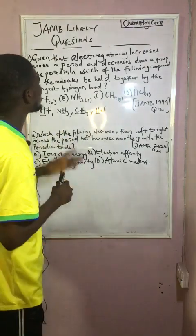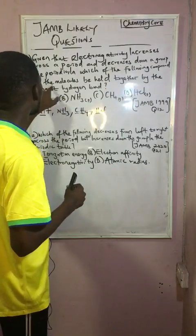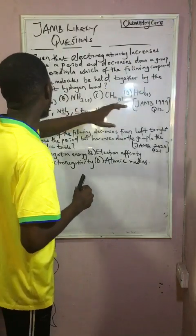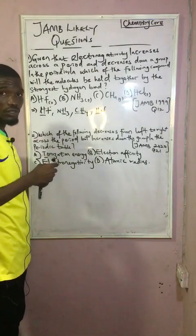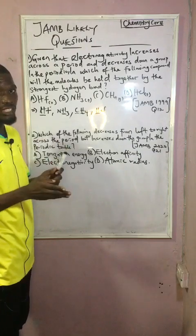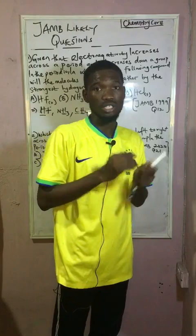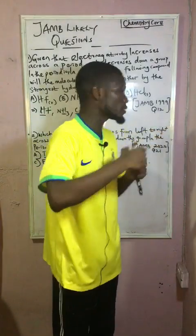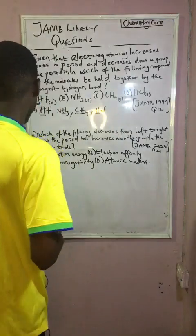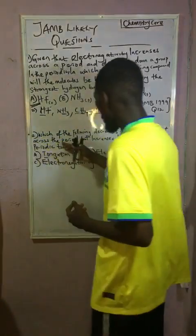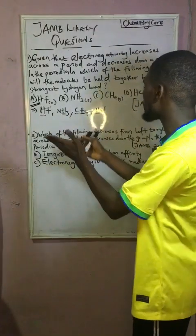Back to the question: in which of the following compounds will the molecules be held together by the strongest hydrogen bond? The answer is HF — hydrogen fluoride — because fluorine has the highest electronegativity value in the electronegativity series. The second question states: which of the following decreases from left to right across a period but increases down the group in the periodic table?